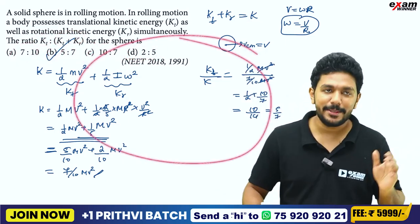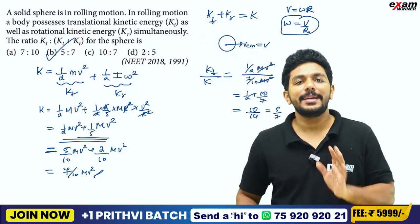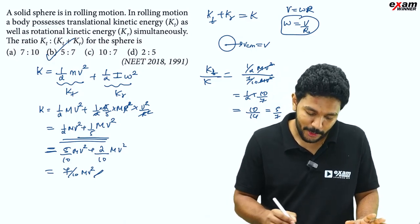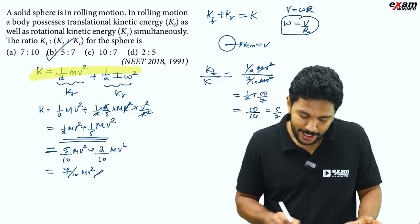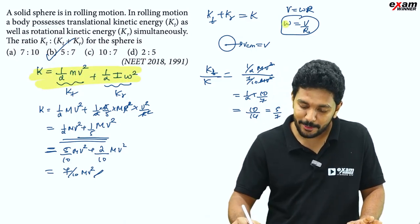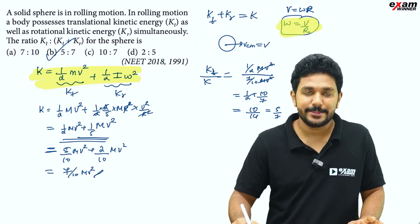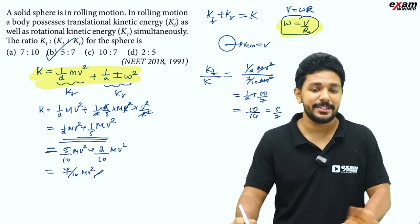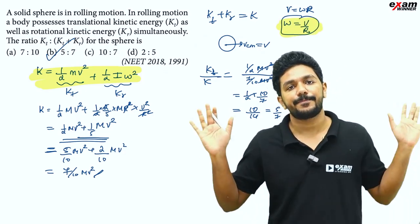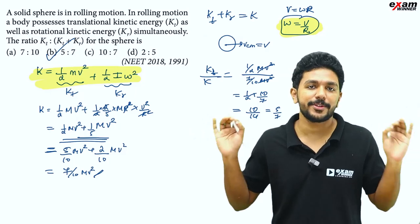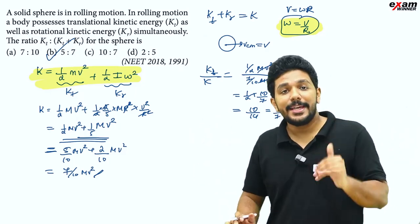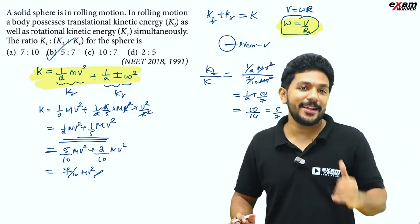If you have the formula for total kinetic energy and remember that omega equals v by r, where v is the center of mass velocity, you can simply solve these types of questions. This leads to the next level of problems.